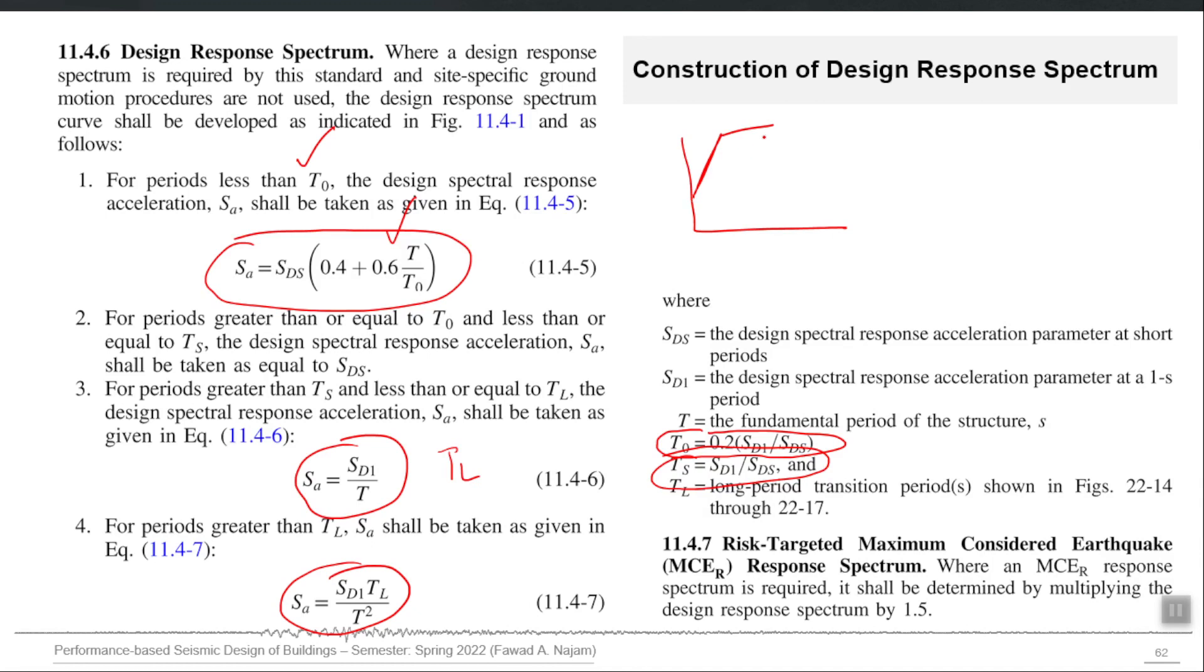This will be your first line up till TL and then second line after TL. That is how you will construct the design response spectrum for your site. It is already design level because it is using SDS and SD1. If you want MCE level for the purpose of performance evaluation PBD, multiply that spectrum with 1.5. Then that will convert to your MCE level.